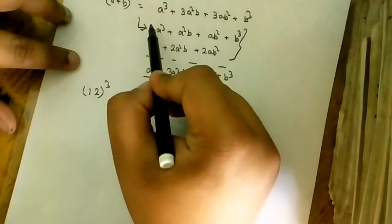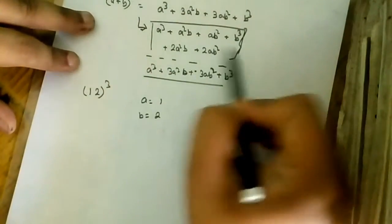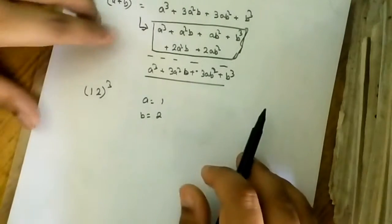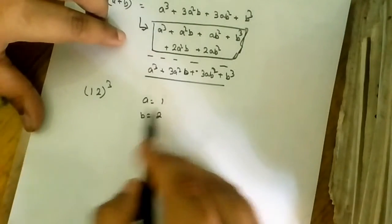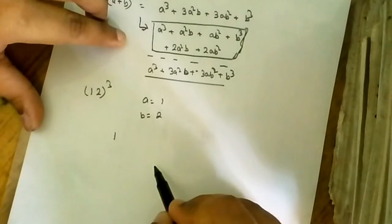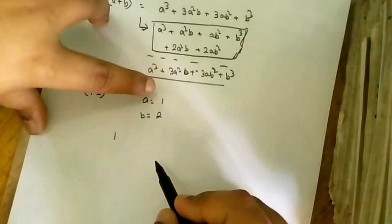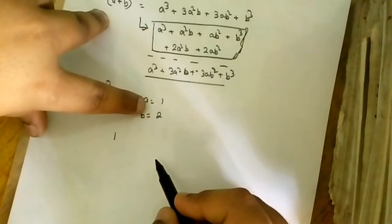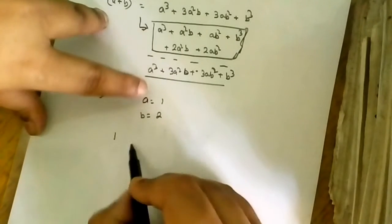follow these two lines. Now a cube means 1 cube, 1 cube is 1. Next, a square b means 1 into 1 into 2, 1 into 1, 1 into 2 is equals to 2.